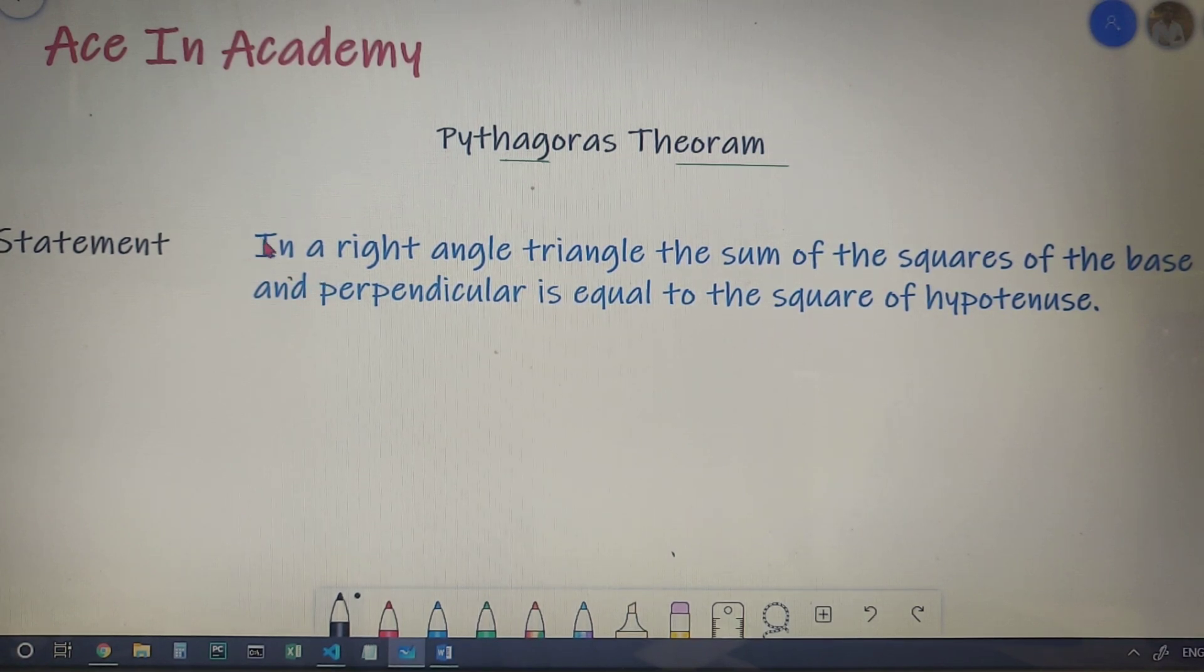The statement states that in a right-angled triangle, the sum of the squares of the base and perpendicular is equal to the square of the hypotenuse. Let me explain it to you diagrammatically.